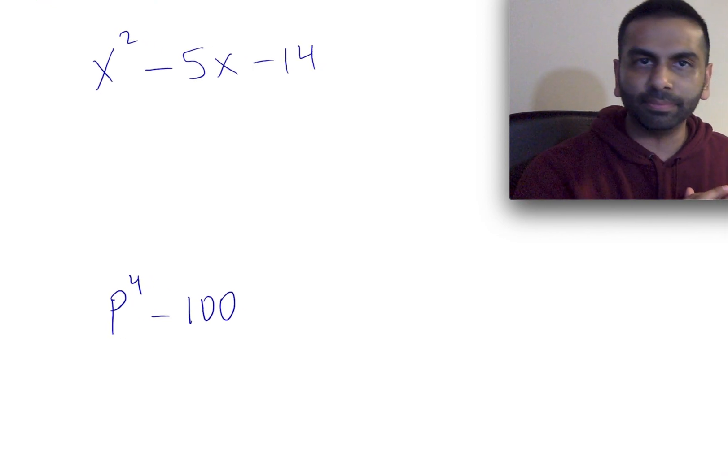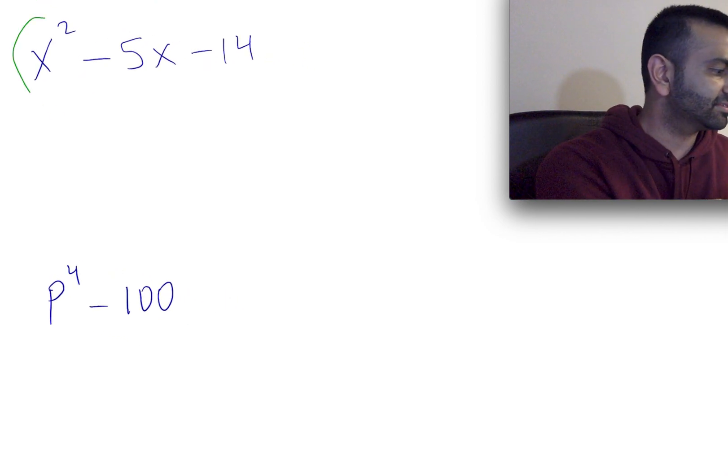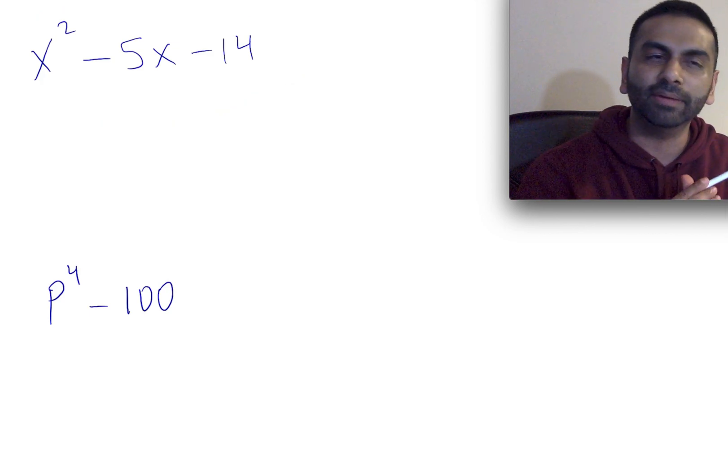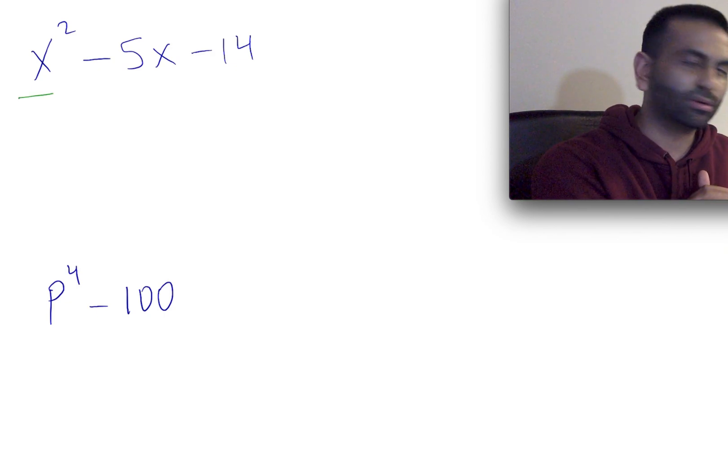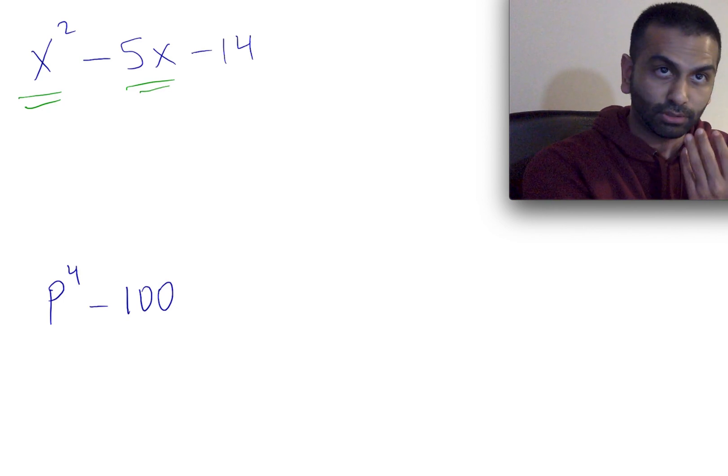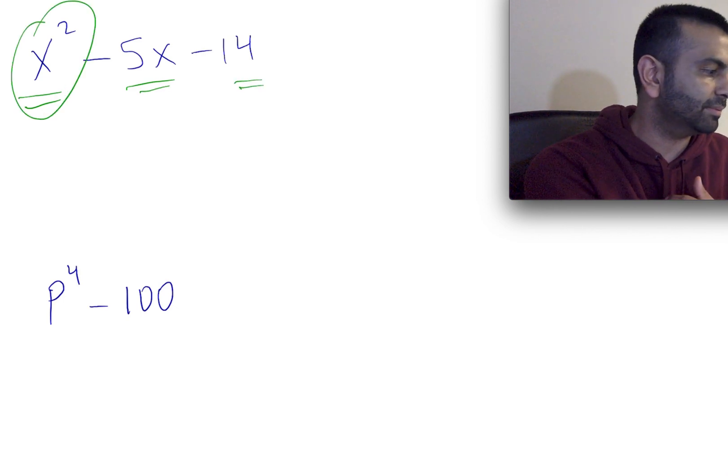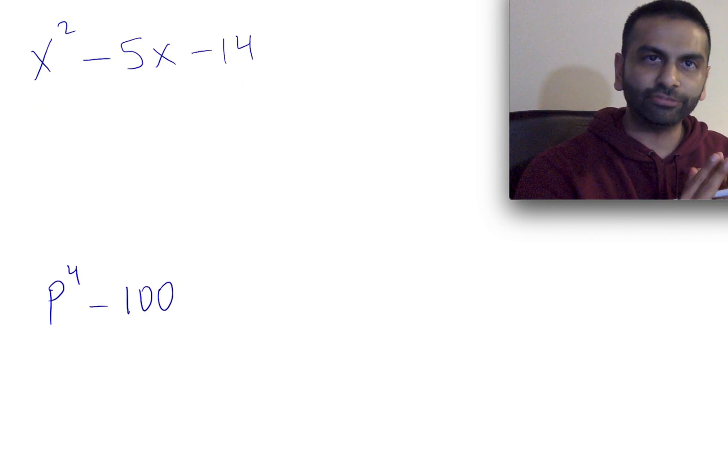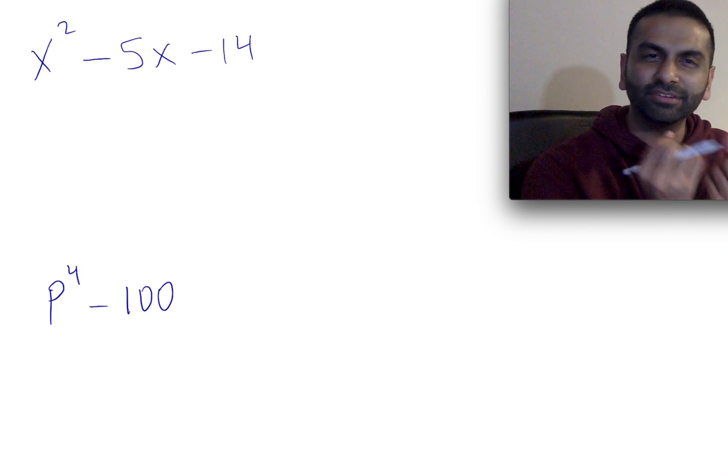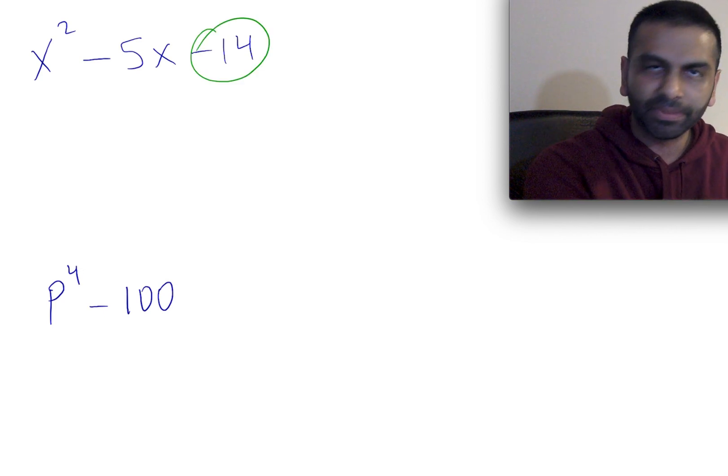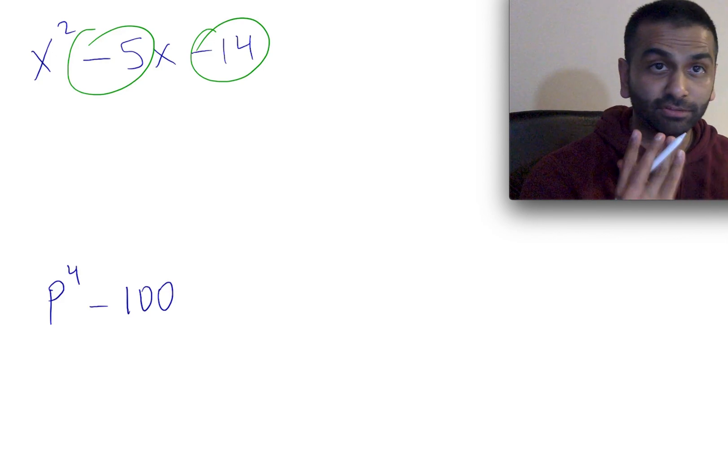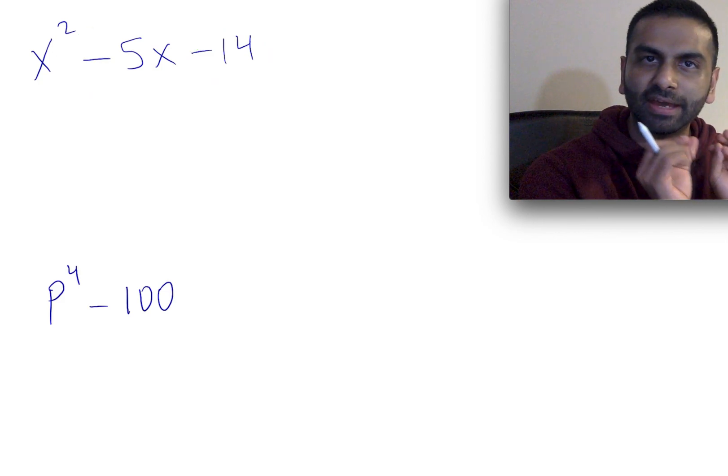Another type of factoring problem you'll often see is something like this—quadratic factoring. The way to factor something like this, where there's a squared term, a regular variable term, and then a constant term, the standard procedure is almost like a guess and check thing. We're looking for two numbers that multiply with each other to give us negative 14, but add up to each other to give us negative 5. That's what we're looking for. First, let's find that set of numbers.